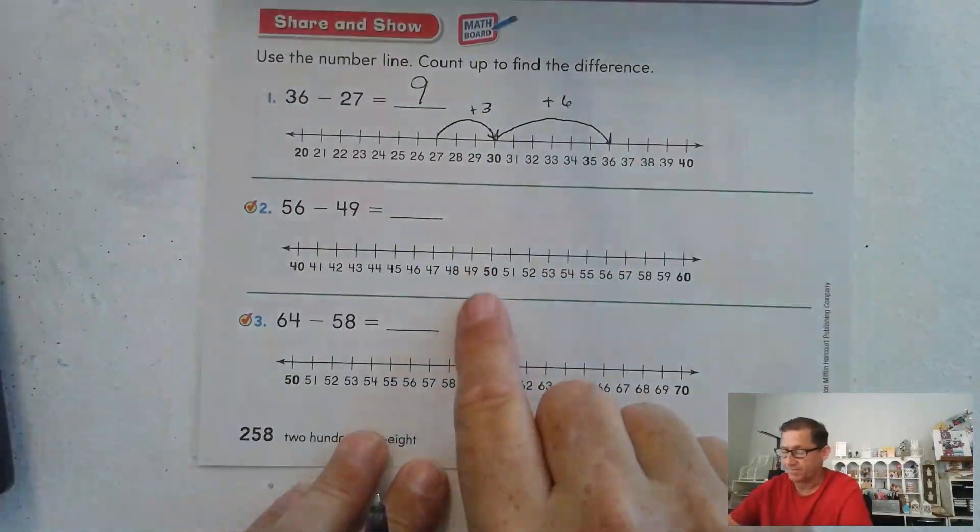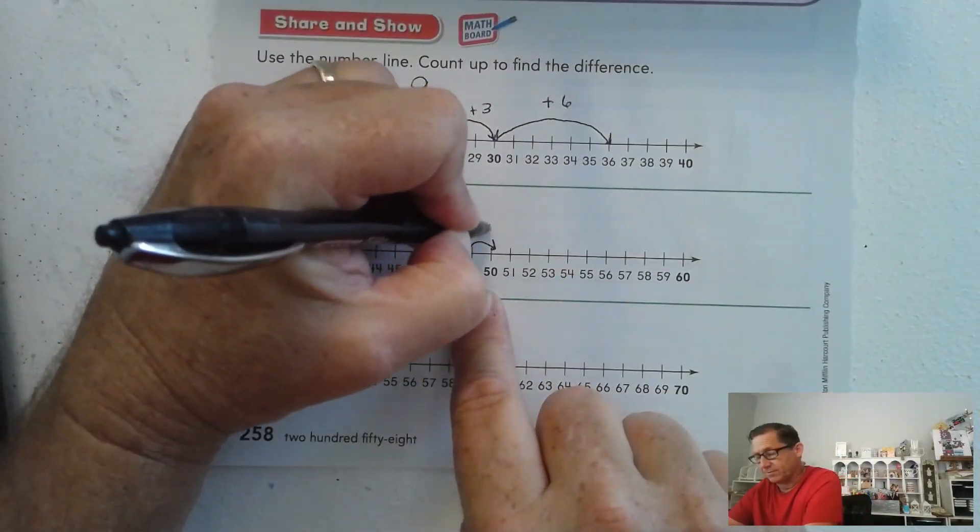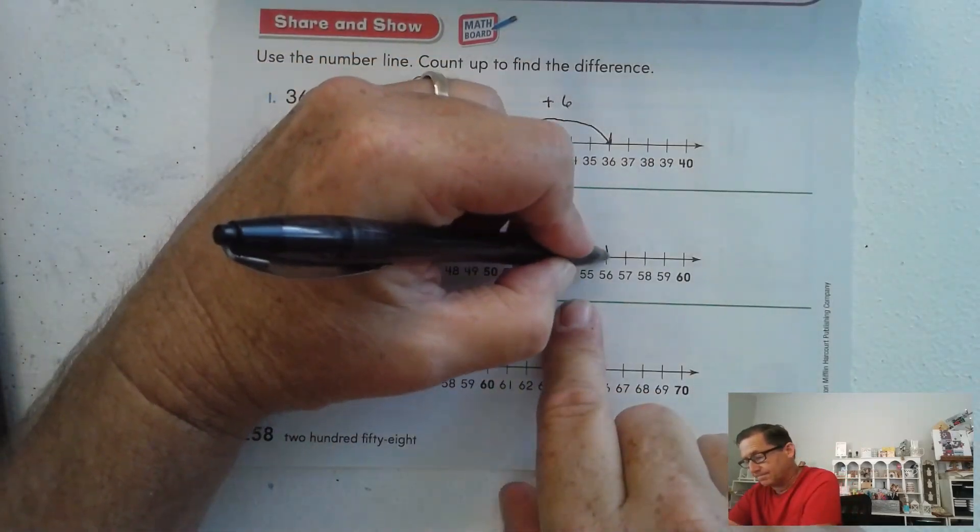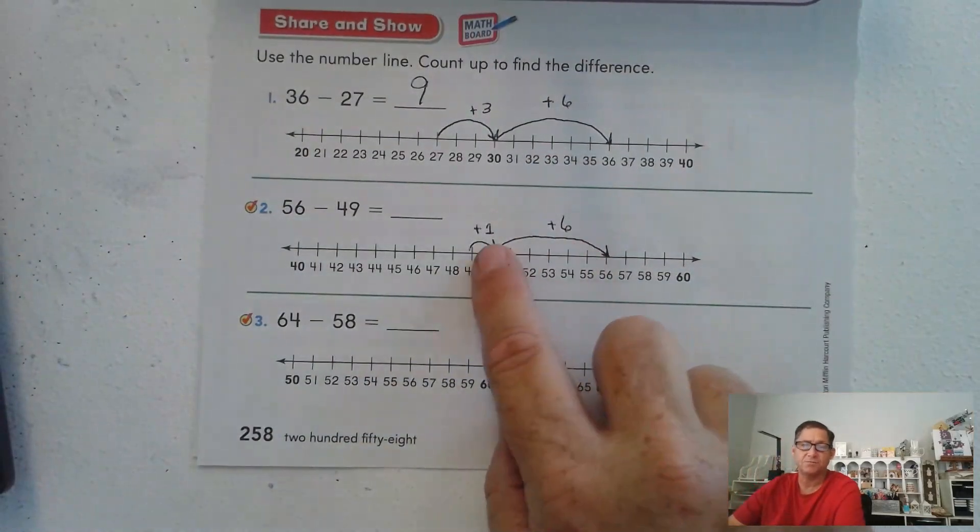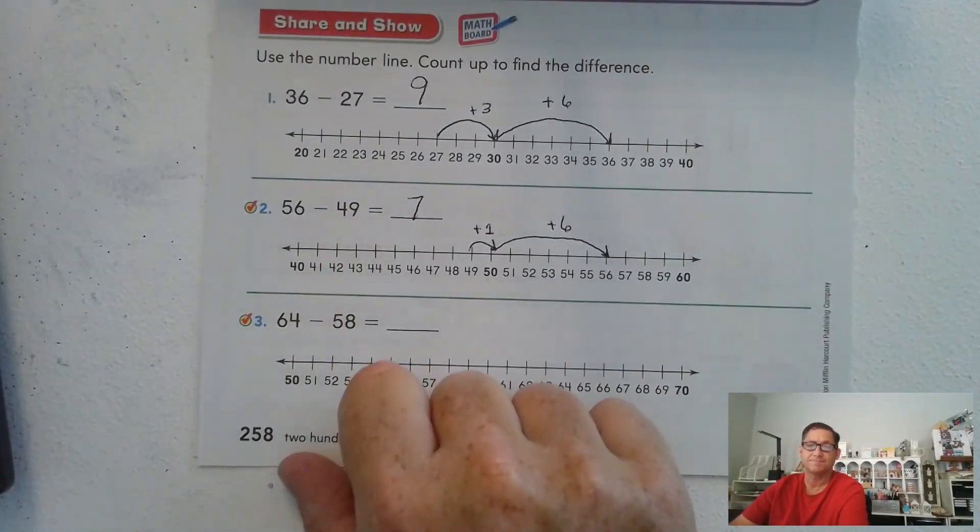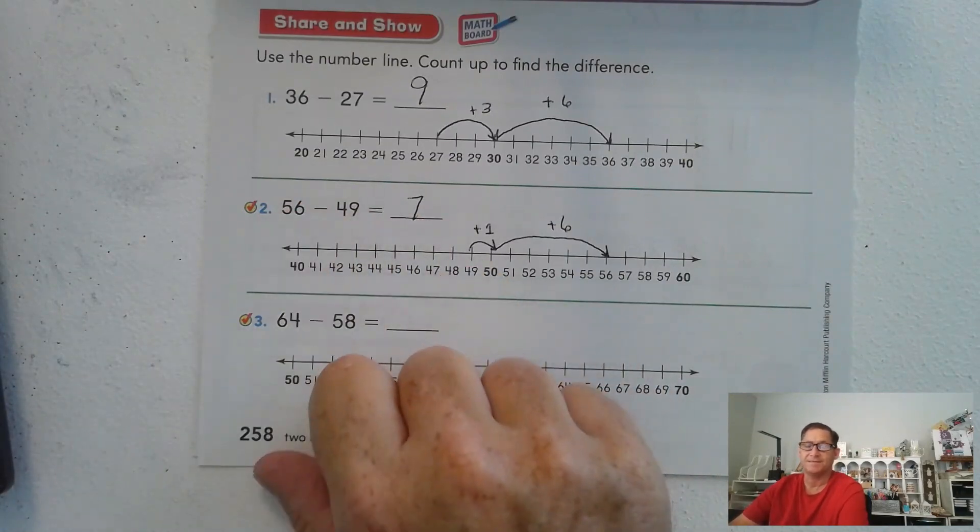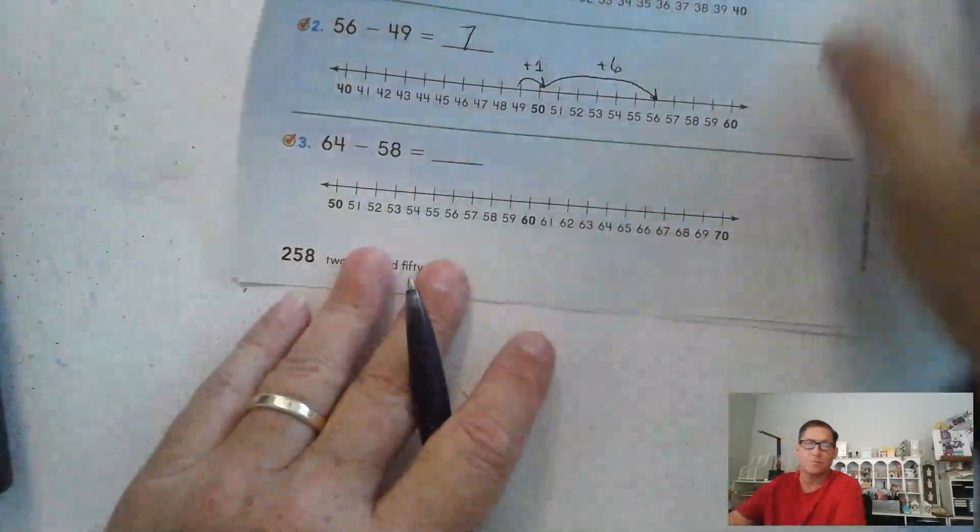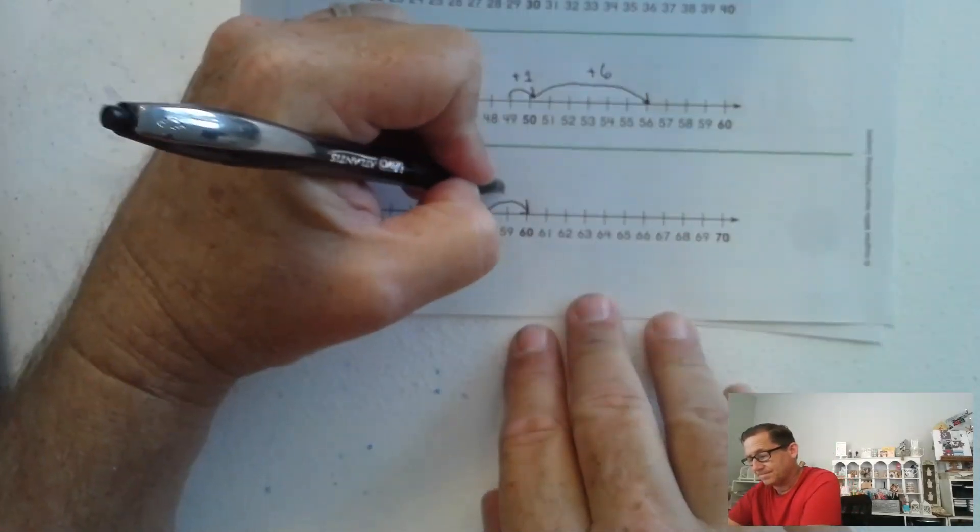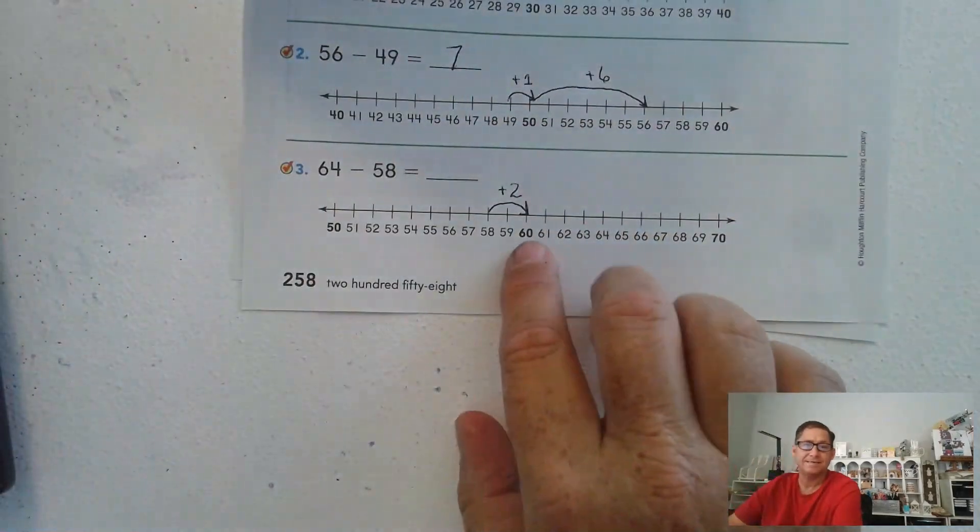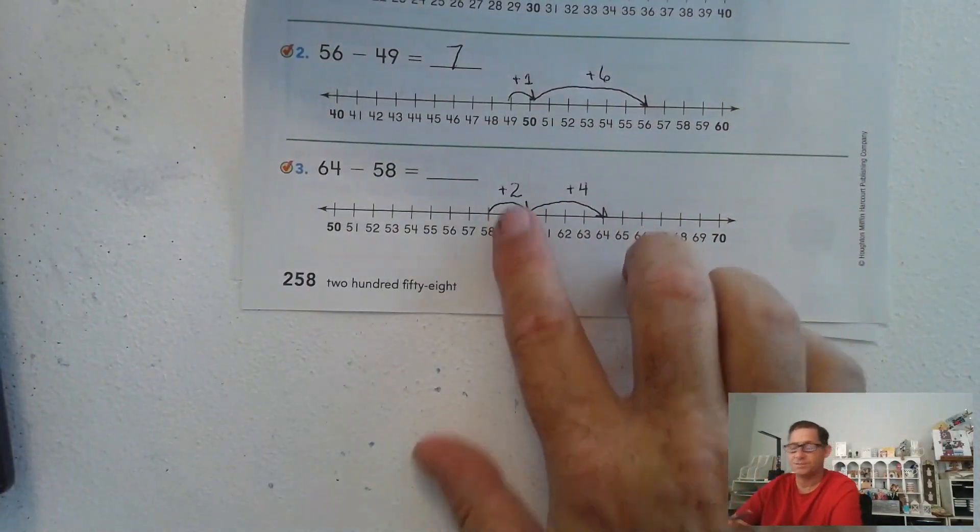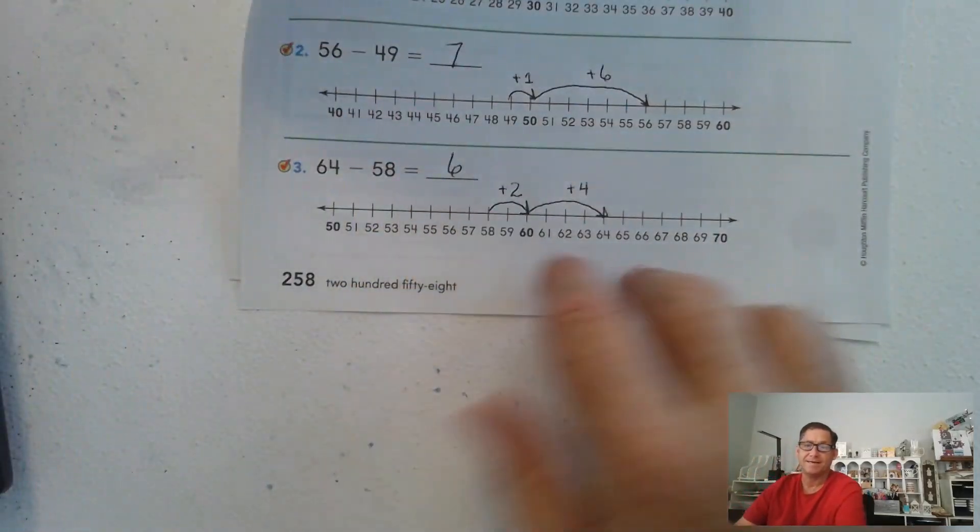56 minus 49. Let's start at 49 and let's just go to 50. Well, that's just plus 1. Now let's go from 50 to 56. How much is that? 6 plus 1, 7. So 56 minus 49 is 7. Just as 49 plus 7 is 56. 64 minus 58. Let's start at 58 and count up to 60. So we're at 60. Now we have to go to 64. So how much did we jump? We jumped 4 plus 2, 6. So 64 minus 58 is 6.